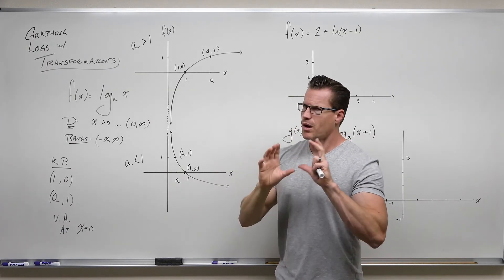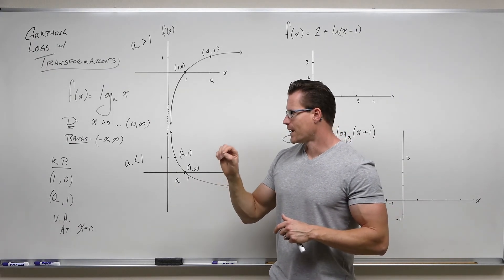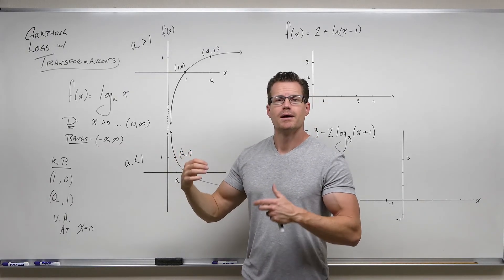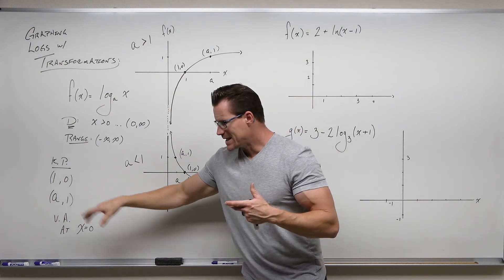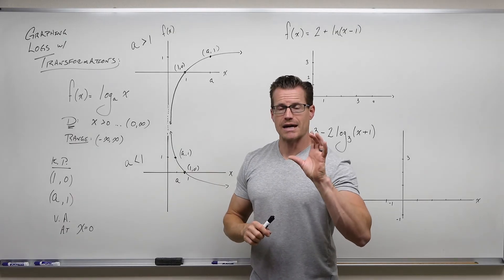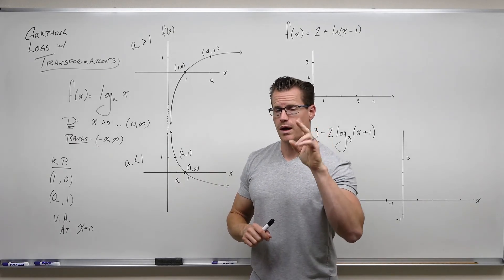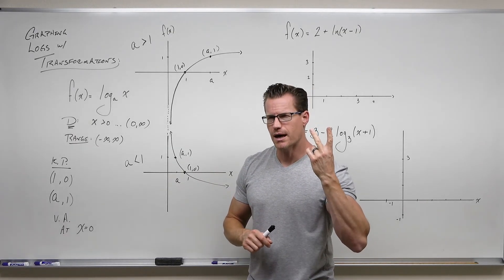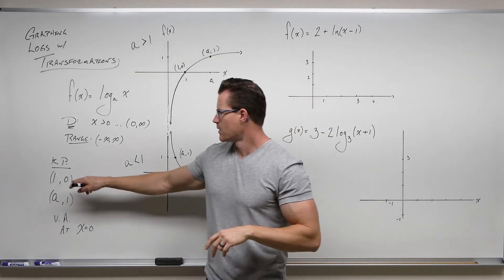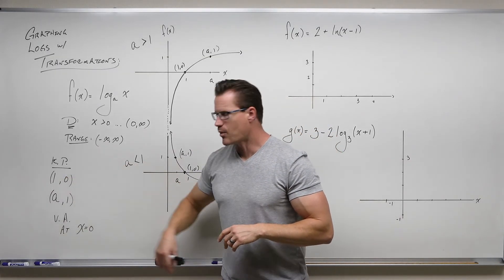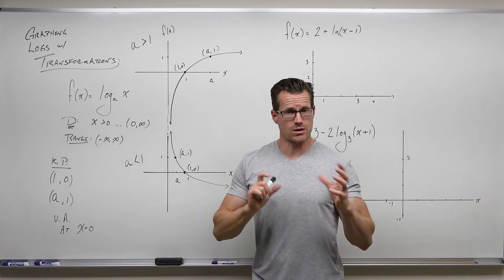Our key points are always, always 1, 0, and a, 1. That stems from whatever our base is, and that comes from the fact that with exponentials, we got 0, 1, and 1, a. So reverse that, we have for inverses, 1, 0, and a, 1 for every exponential before we start shifting that.